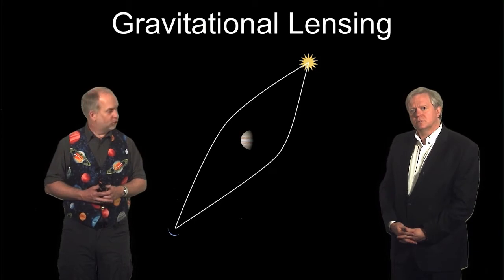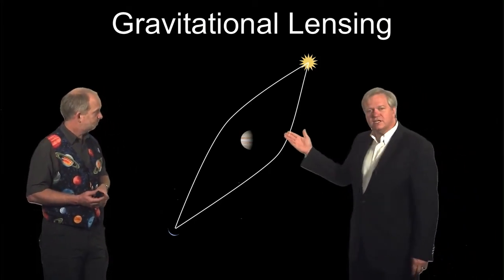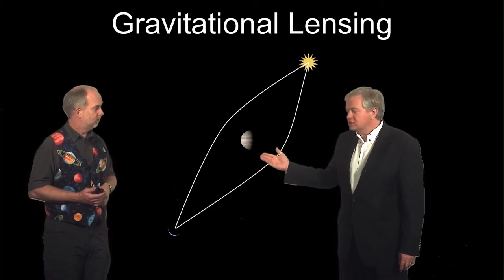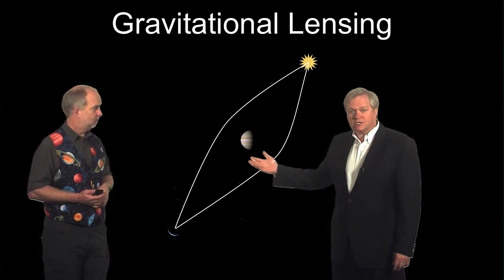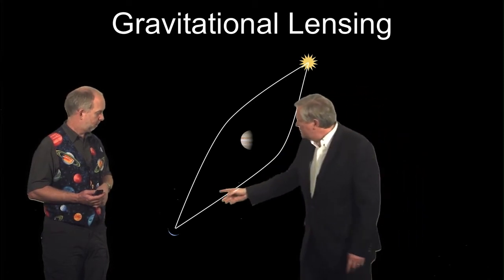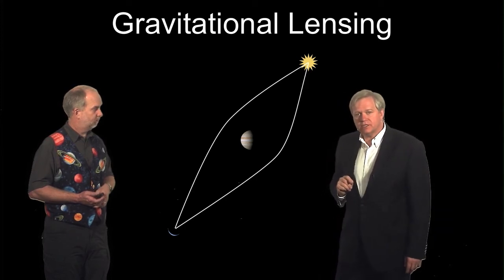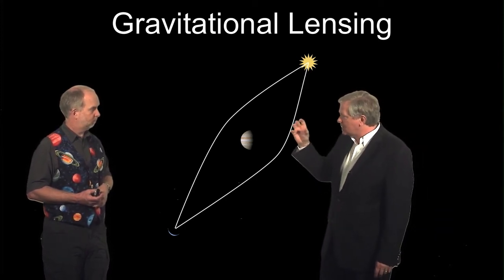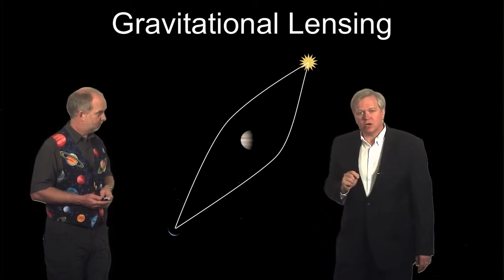A third approach is gravitational lensing. Now, this one's kind of tricky. So, we know that gravity can bend light, and so imagine that you have an object between us and another star. If that planet gets exactly lined up with the star behind it, it will act as a lens, a gravitational lens, and magnify the background star a little bit.